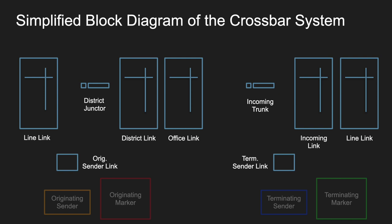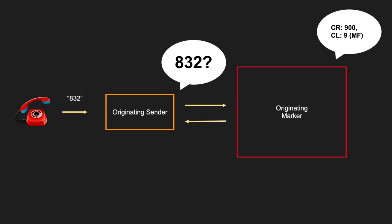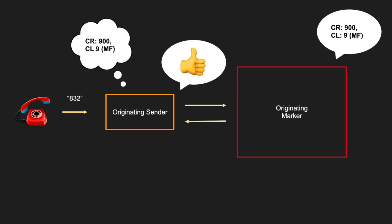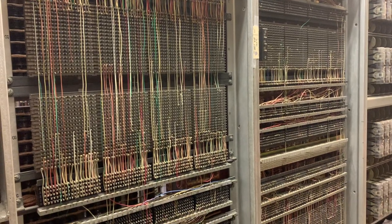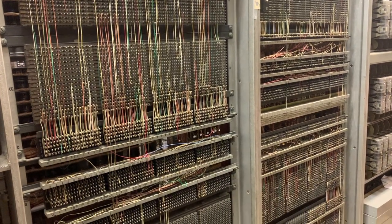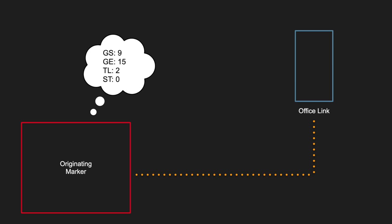Markers are the control bits that tell the switch fabric how to do the connecting that switches do. An originating marker in a number one crossbar has two main jobs. First, it acts like a database of all the routes that a central office has — for instance, a sender can ask the marker for call completion info for the 832 code, and the marker will pass that info back. The storage method used for that database is these cross-connect fields, where each connection represents a piece of information the marker can call upon when asked.